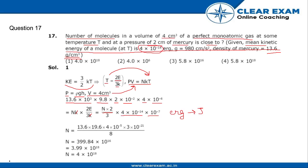Now we will simply shift the terms and N equals 13.6 × 19.6 × 4 × 10⁻⁵ × 3 × 10⁷ / 8, which gives us N as 399.84 × 10¹⁶, which is 3.99 × 10¹⁸, which is roughly 4 × 10¹⁸.